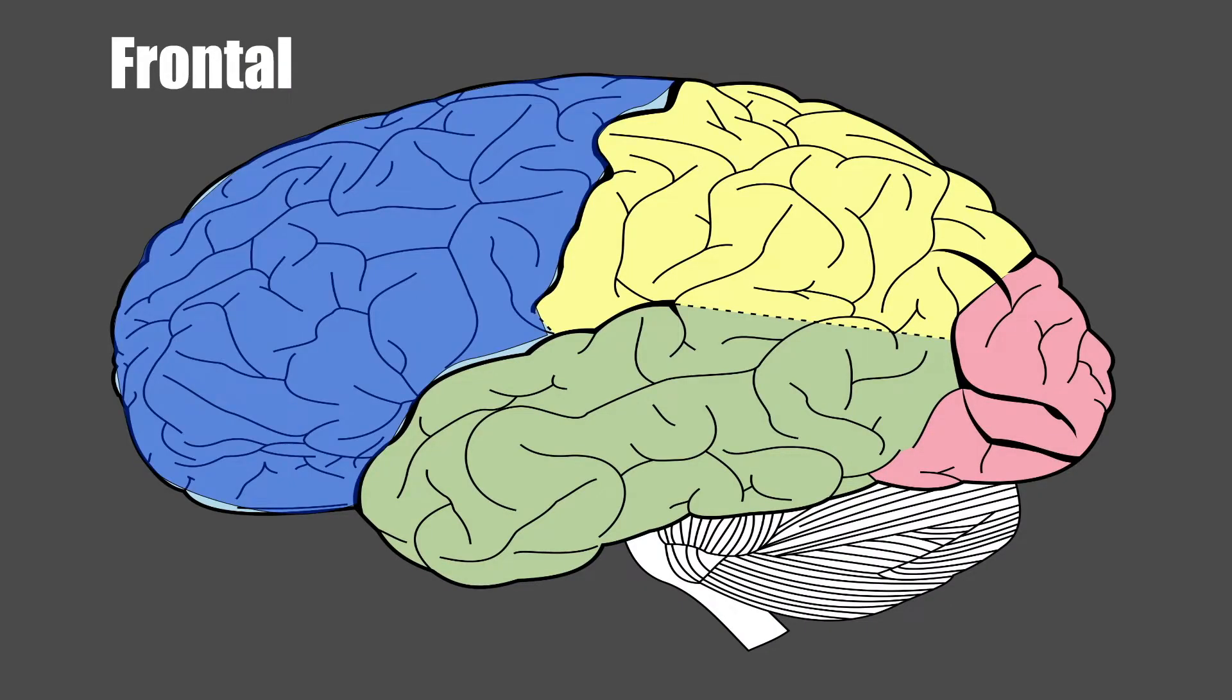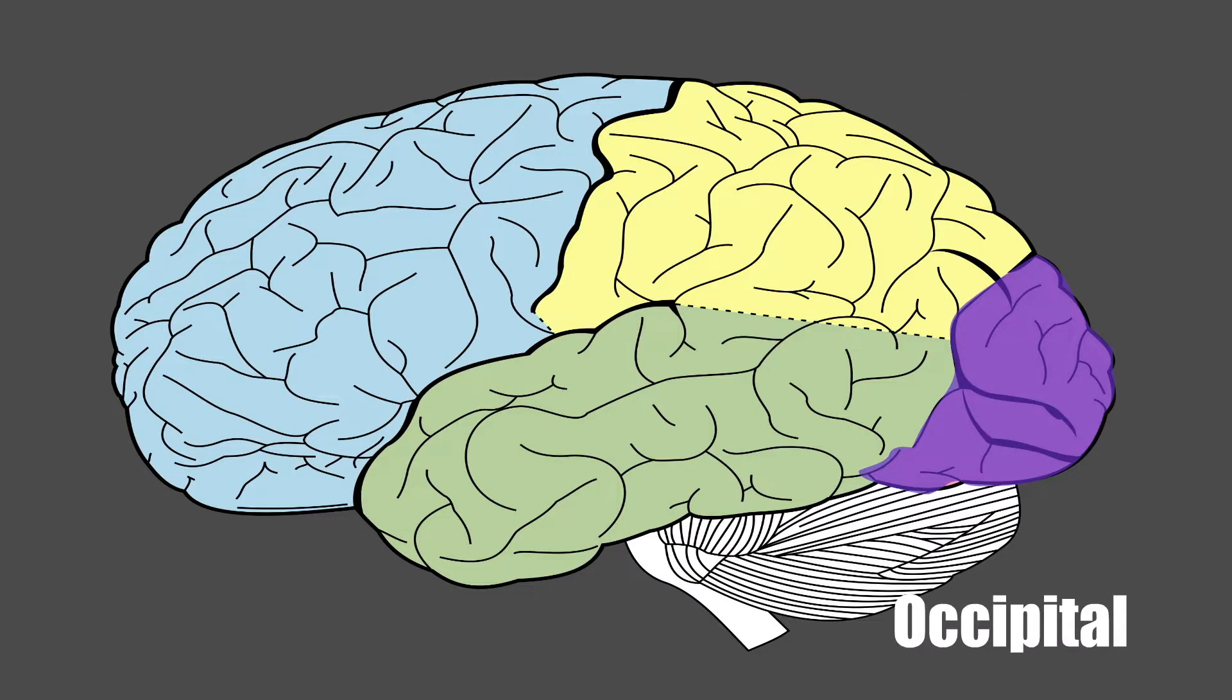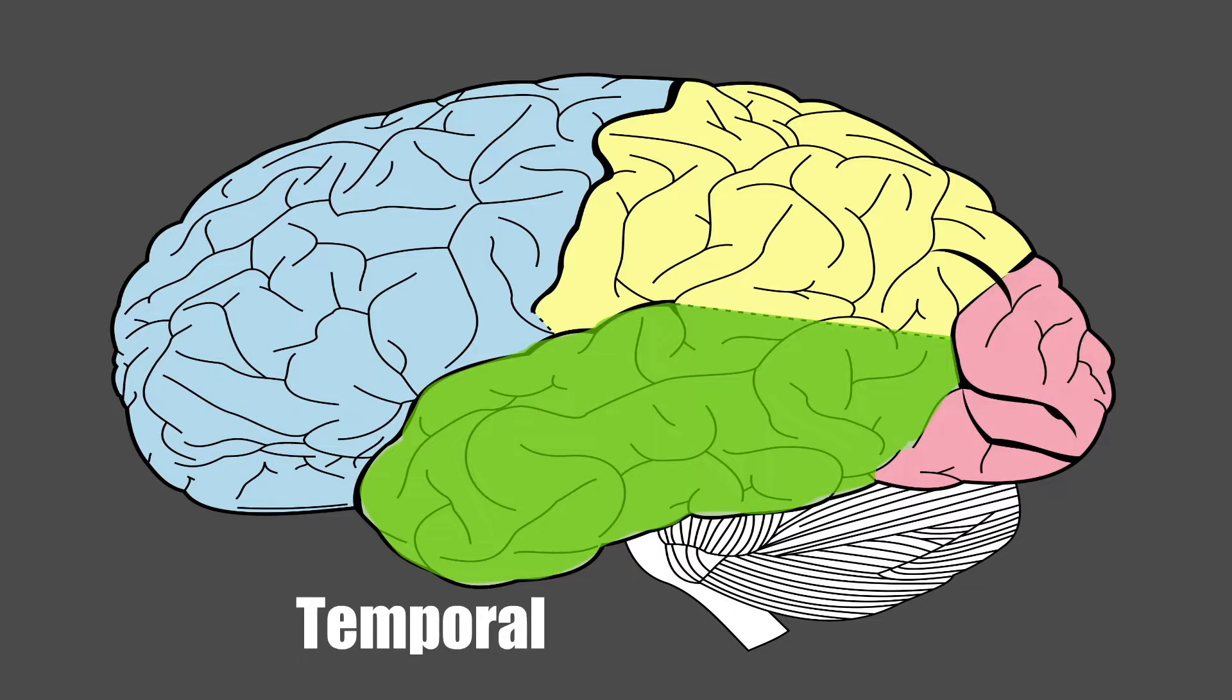The frontal lobe is situated in front of the central sulcus and above the lateral sulcus. The parietal lobe is situated behind the central sulcus and above the lateral sulcus. The occipital lobe lies below the parieto-occipital sulcus. The temporal lobe is situated below the lateral sulcus.